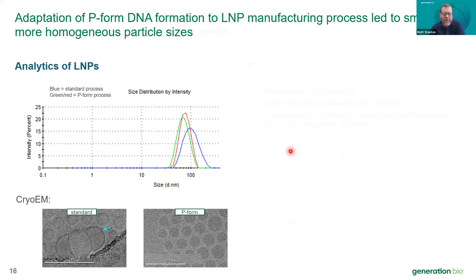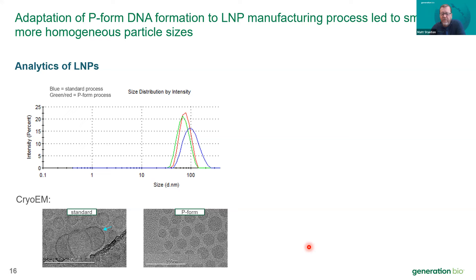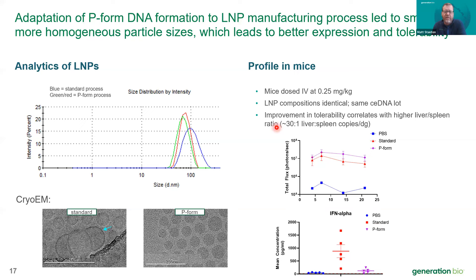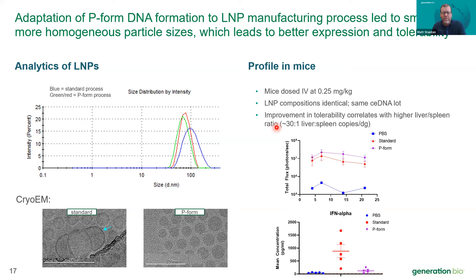We were successful in creating smaller particles and could now test our hypothesis in vivo. In wild-type mice dosed IV at 0.25 mg/kg with identical lipid compositions and the same lot of closed-ended DNA, just the process change controlling particle size and distribution yielded better expression, nominally better and durable as expected from a DNA platform. Importantly, interferon alpha levels went down significantly, and we confirmed a higher liver-to-spleen ratio of about 30-to-1 with the smaller particles — a significant improvement.